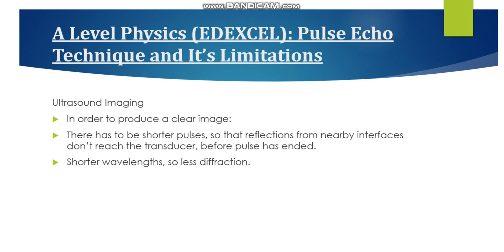It's important to note that in ultrasound imaging, in order to produce a clear image, there have to be shorter pulses, so that reflections from nearby interfaces don't reach the transducer before the pulse has ended. It's also important to note that shorter wavelengths are necessary.